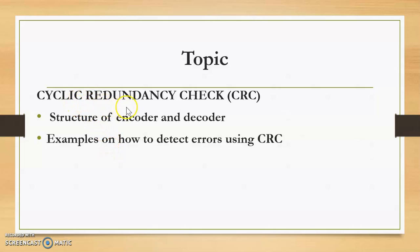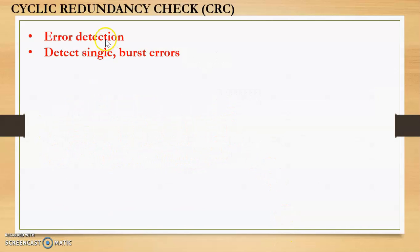In this video we will study cyclic redundancy check, or CRC. We will study the structure of the encoder and decoder in CRC, and then solve examples on how to detect errors using CRC. This method is widely used because it can detect single as well as burst errors, meaning more than one bit error.